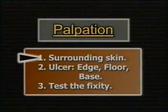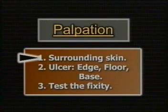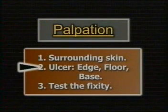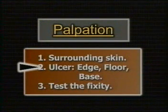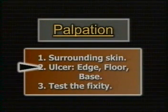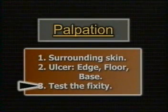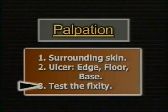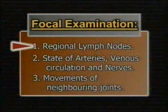To revise: first palpate the surrounding skin for warmth and tenderness, then wear gloves and palpate the edge, the floor, and then through the floor the base of the ulcer. Then move the ulcer from side to side and test its fixity to the underlying structures. After completing the local examination, proceed to the focal examination — first palpate the regional lymph nodes.